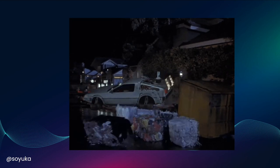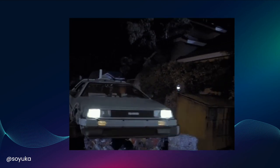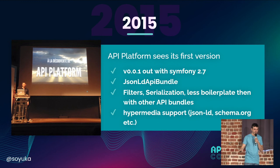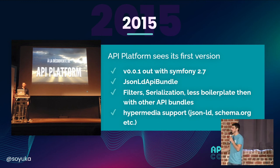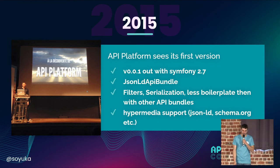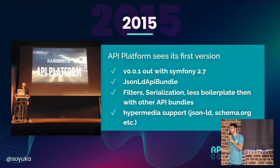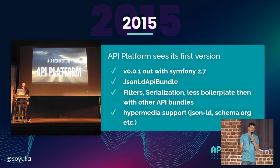Let's take a quick return into the future. It all started in 2015 where Kevin presented the first version of API Platform. It was then called JSON-LD-API-Bundle and came out approximately with Symfony 2.7. It had already filters, serialization, and hypermedia support with the JSON-LD format and schema.org integration.